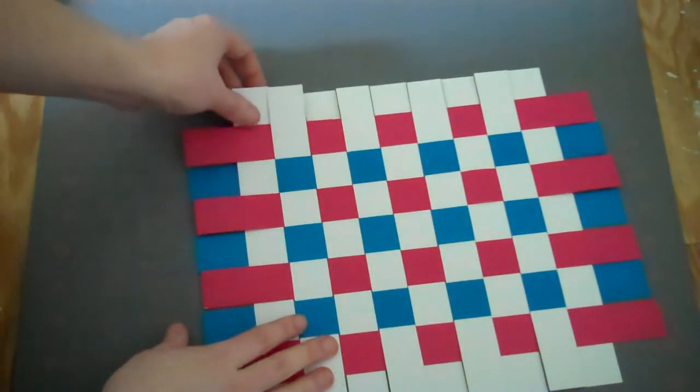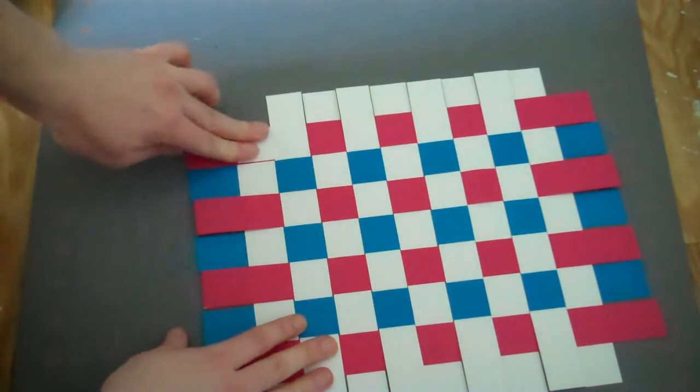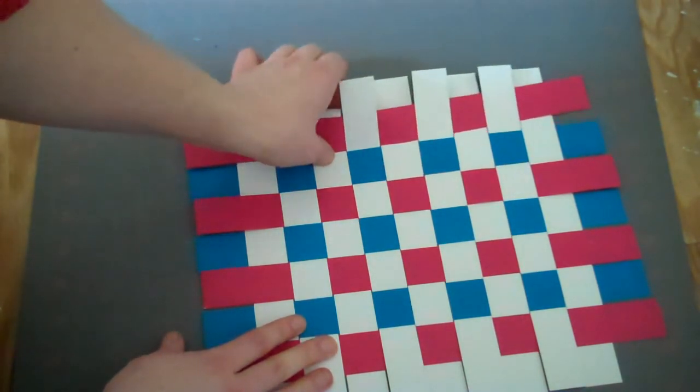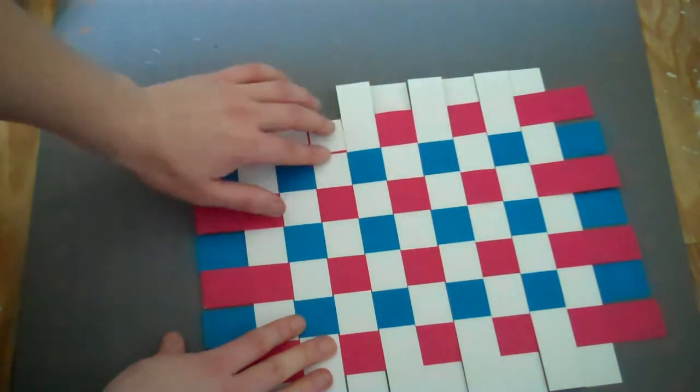Then what you do is just take the pieces, all the ones that are under the colored strips, and fold those over the back. You'll be folding every other one. Make sure you keep nice and tight up against the colored strip.